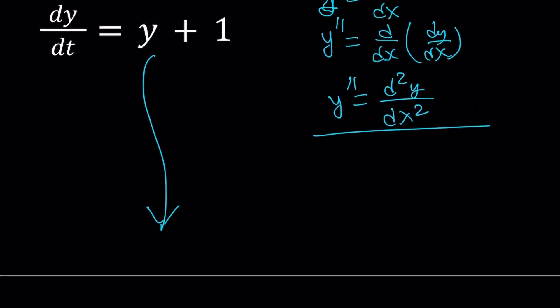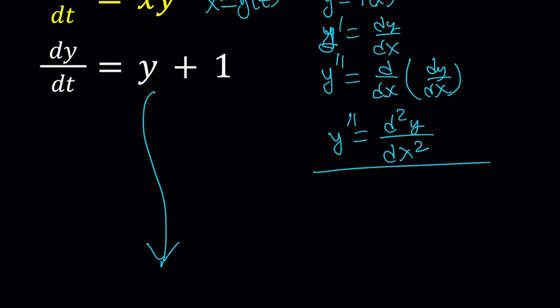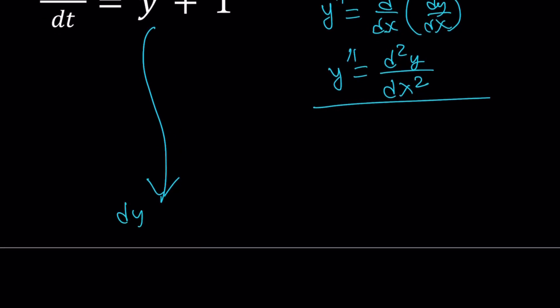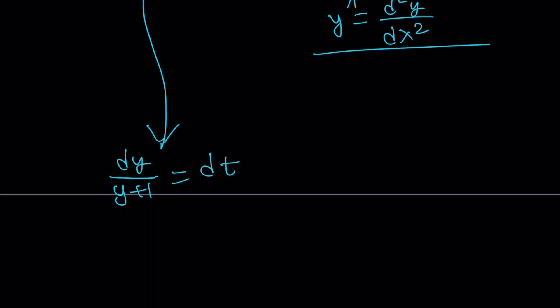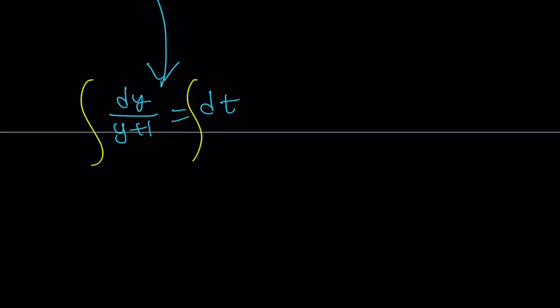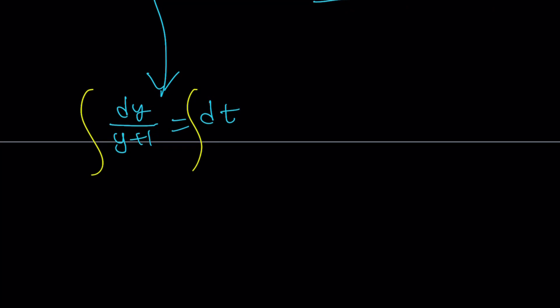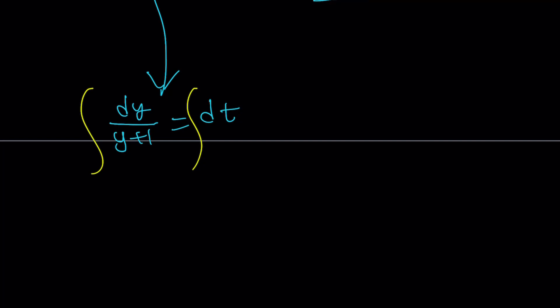So in order to solve that, I'm going to turn this into a separable differential equation. So I'm basically going to divide both sides by y plus one and put the dt on the right-hand side. And then the rest is going to be fairly easy. You're just going to integrate, right? We're going to integrate both sides.